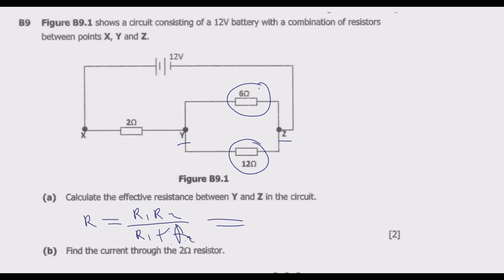What we do in this case is 6 times 12 over 6 plus 12, which will be 72 divided by 18, which is going to give us 4 ohms. So 4 ohms is basically the effective resistor between Y and Z.